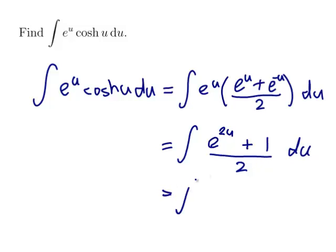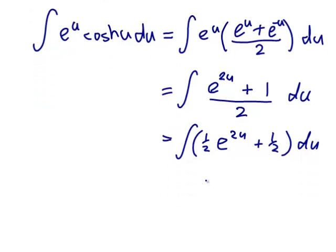So that would be one half of e to the 2u plus one half du. Okay, and so I can just integrate them now. The half will stay there.